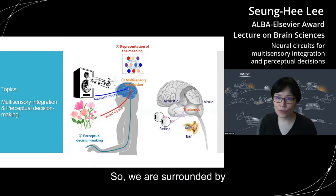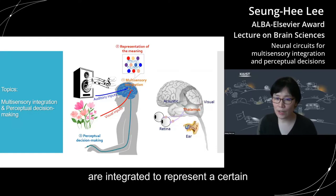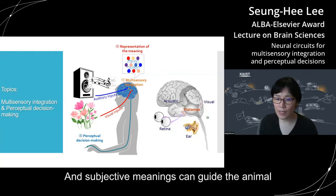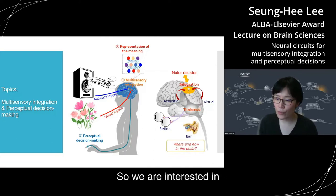We are surrounded by multiple sensory inputs and we use eyes and ears to receive visual and auditory inputs to our brain. In the brain, auditory and visual inputs are integrated to represent a certain specific meaning for individuals, and subjective meanings can guide the animal to make perceptual decisions. We still do not know where in the brain this integration occurs and how it guides neural decisions in the brain.